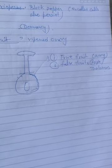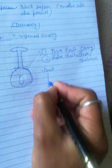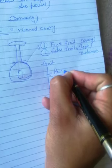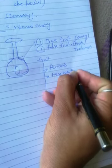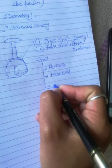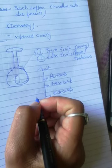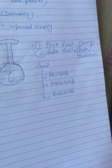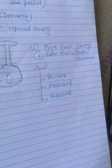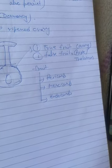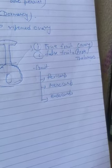If you observe the structure of a fruit, there are three parts. The outermost part is called the pericarp, the middle part is called the mesocarp, and the innermost part is called the endocarp. For example, in a mango, the outer peel is the pericarp, the fleshy edible part is the mesocarp, and the hard inner layer surrounding the seed is the endocarp.